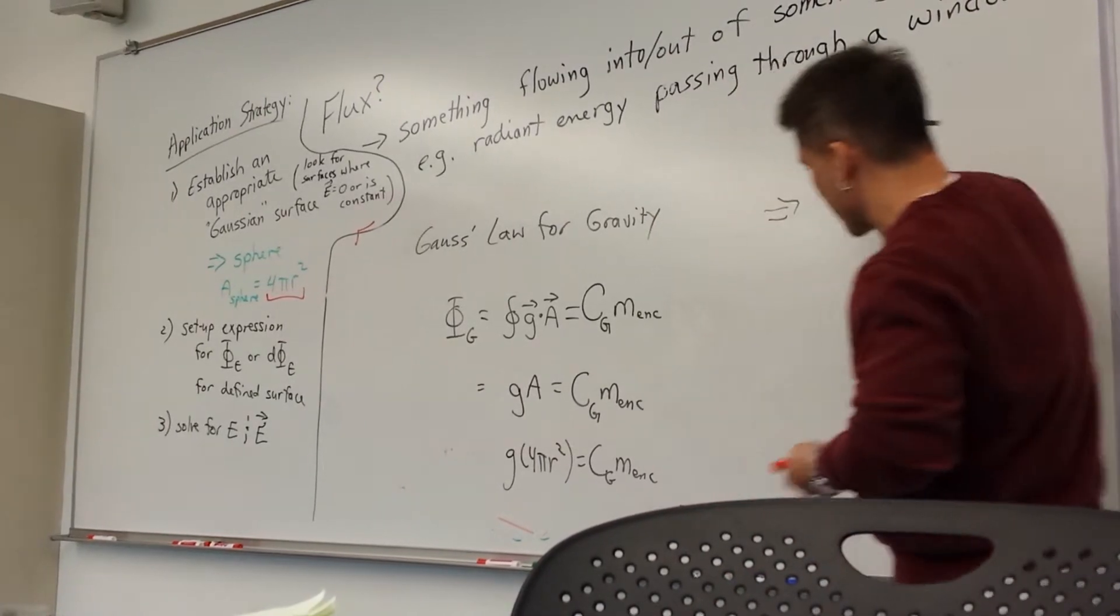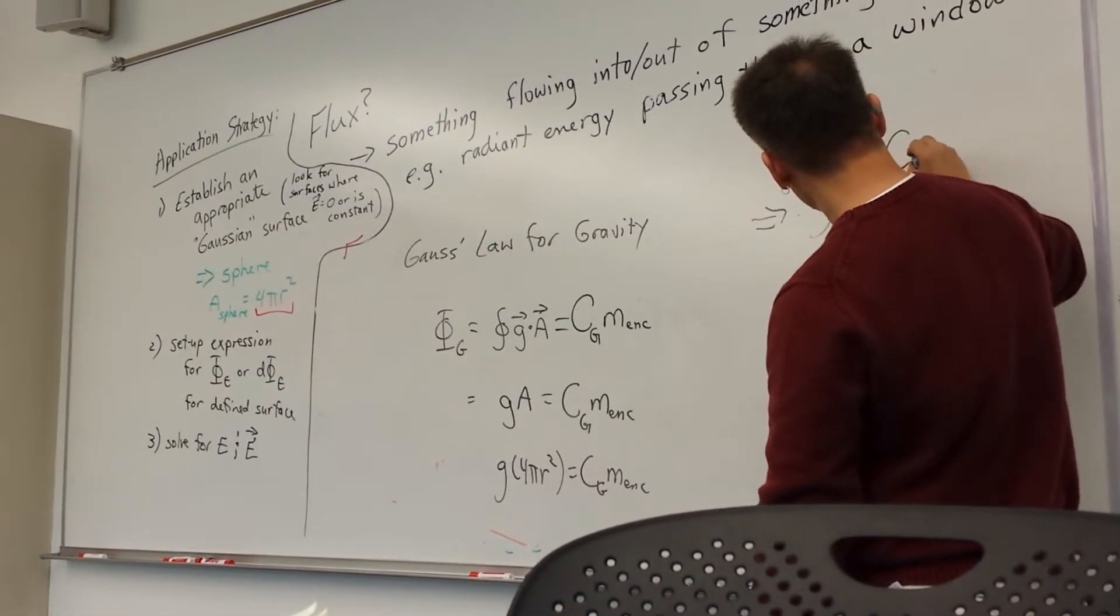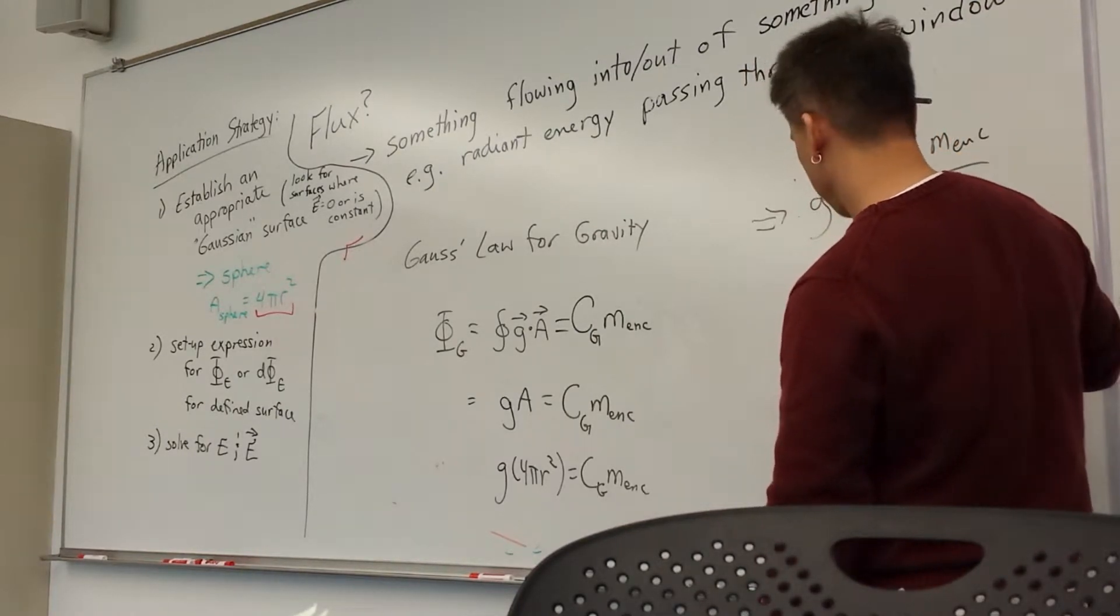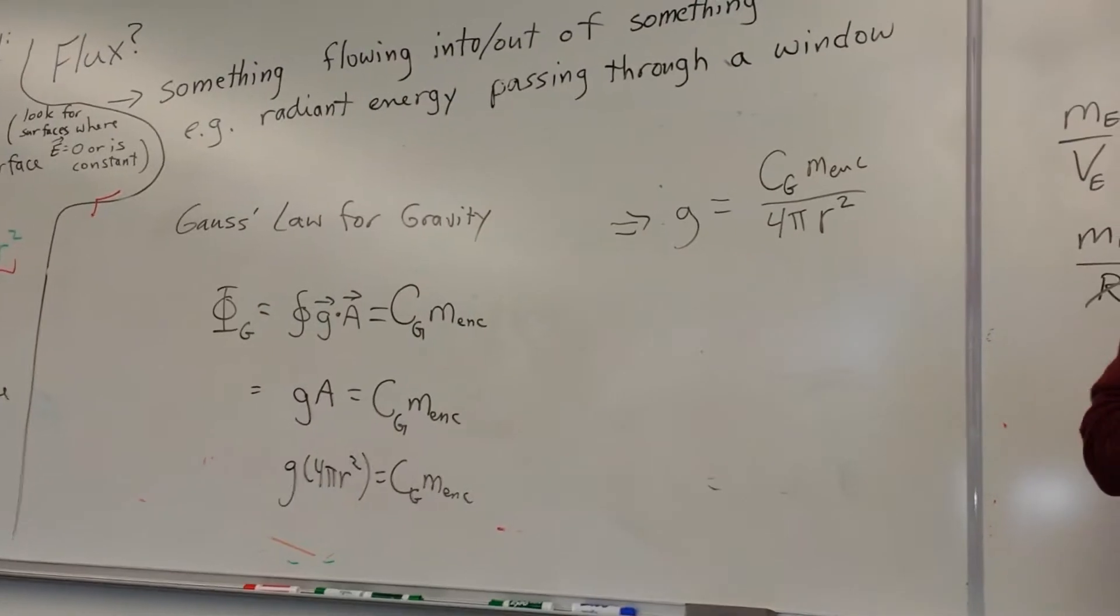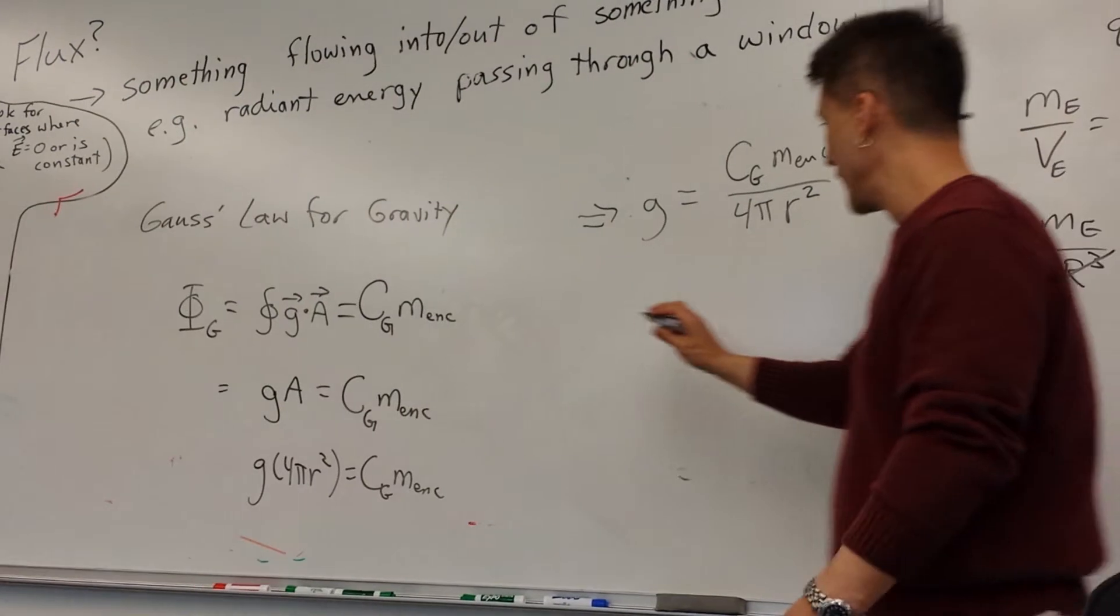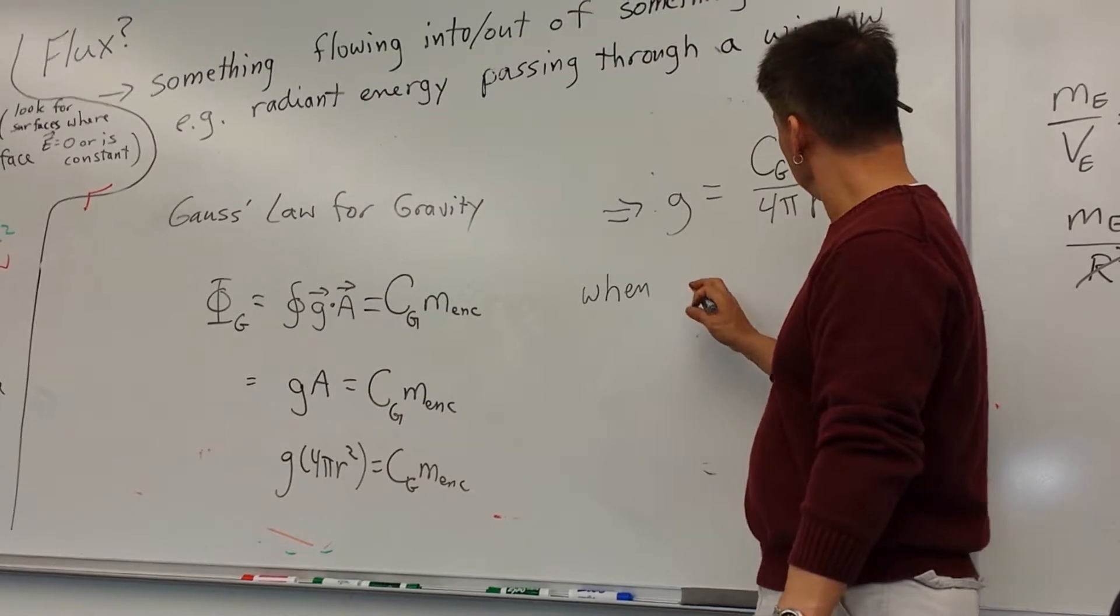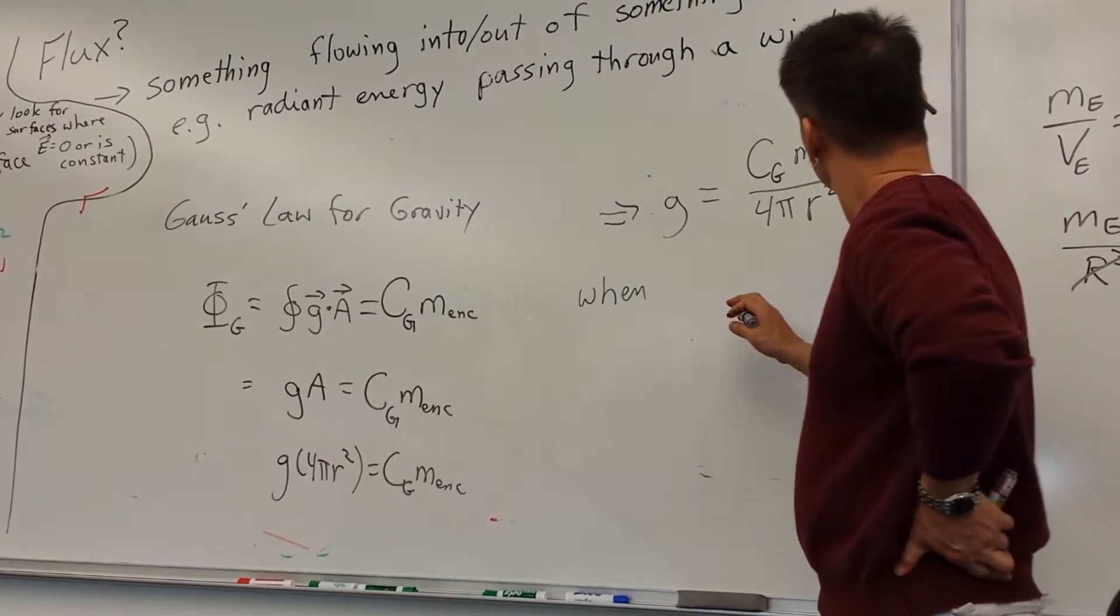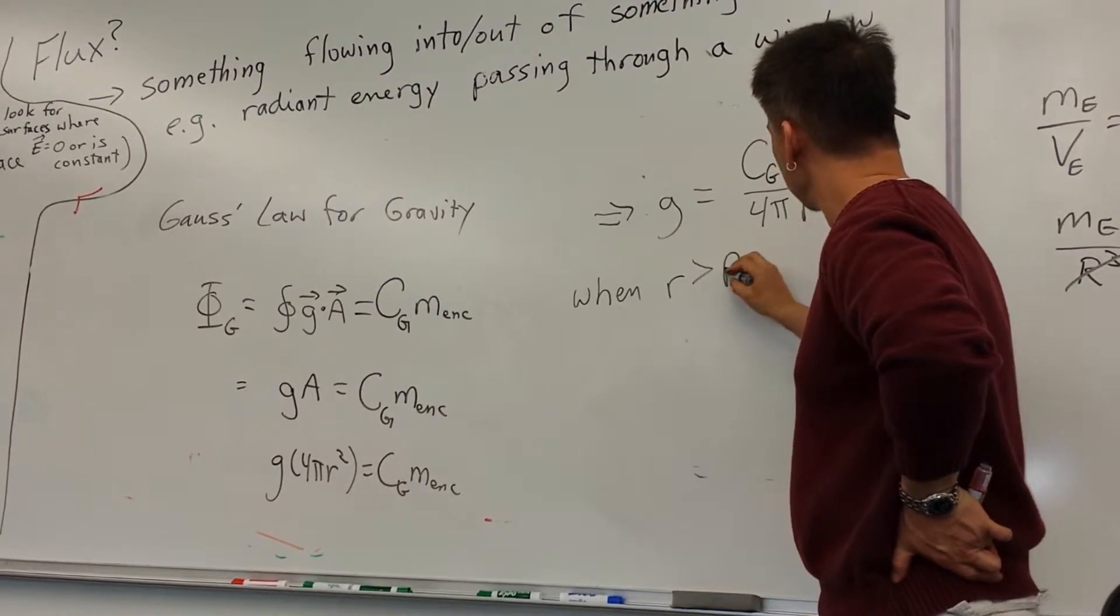We solve for G. And G should be related to C_G M_enclosed over 4πR². Now that's what Gauss's Law should look like when R is greater than big R.